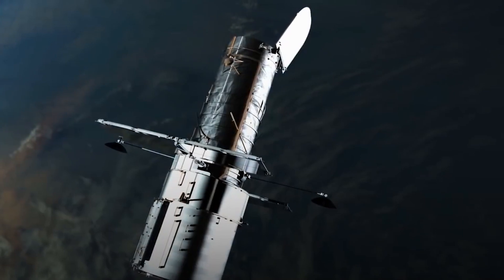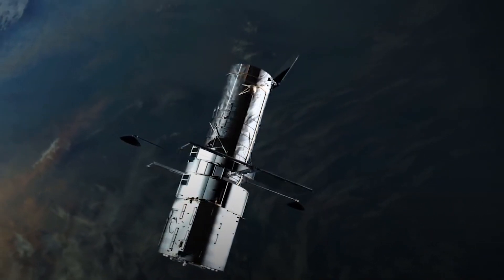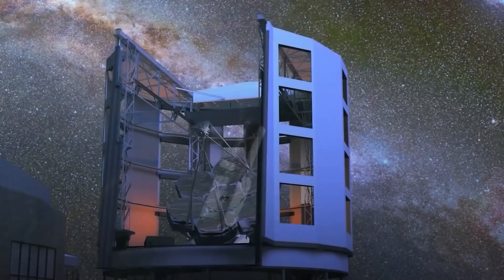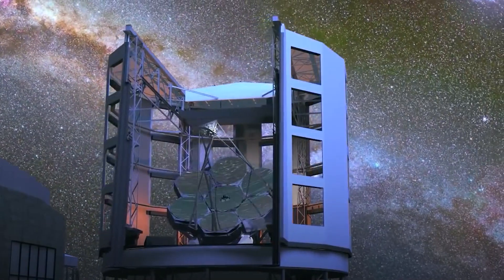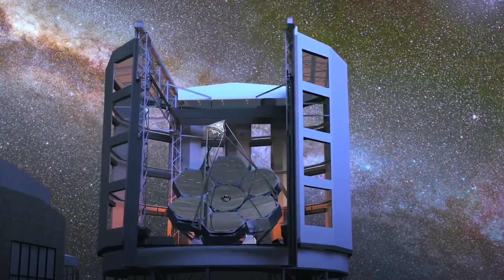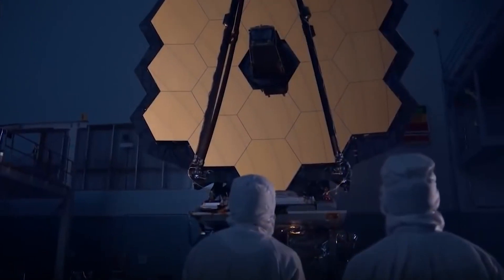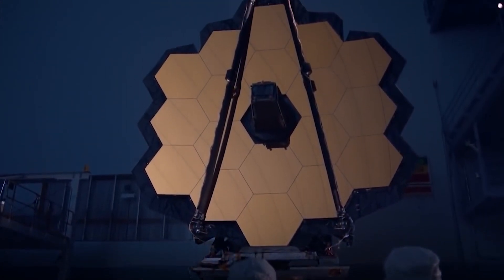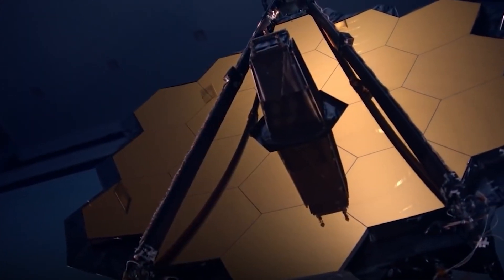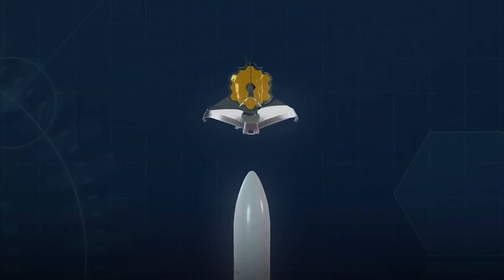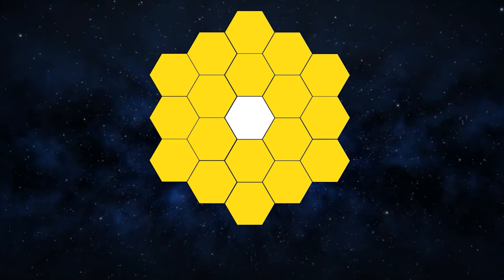Number 4. Next Steps. The world's largest and most complex space science telescope will now begin moving its 18 primary mirror segments to align the telescope optics. The ground team will command 126 actuators on the backsides of the segments to flex each mirror, an alignment that will take months to complete. Then, the team will calibrate the science instruments prior to delivering Webb's first images this summer.